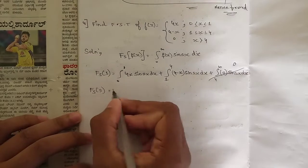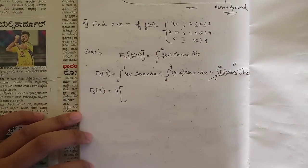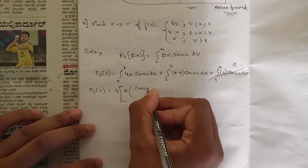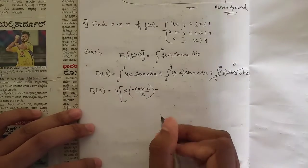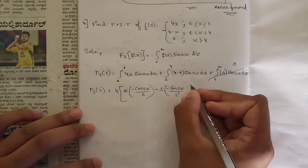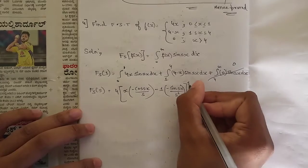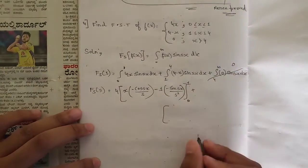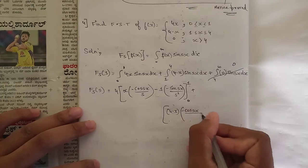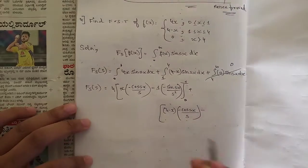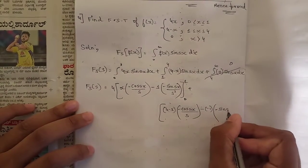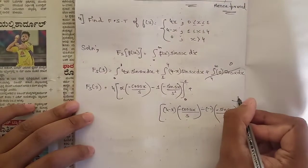Take 4 outside the first integral and apply Bernoulli's rule: first function x as-is times the integral of sin(sx) which is -cos(sx)/s, minus the derivative of x (which is 1) times the integral of the integrated function, -sin(sx)/s², limits from 0 to 1. For the second integral: (4-x)·(-cos(sx)/s) minus the derivative of (4-x) which is -1 times -sin(sx)/s², limits from 1 to 4.